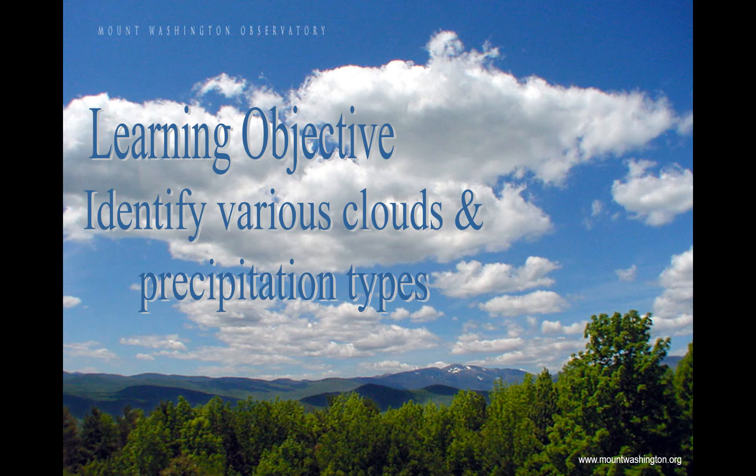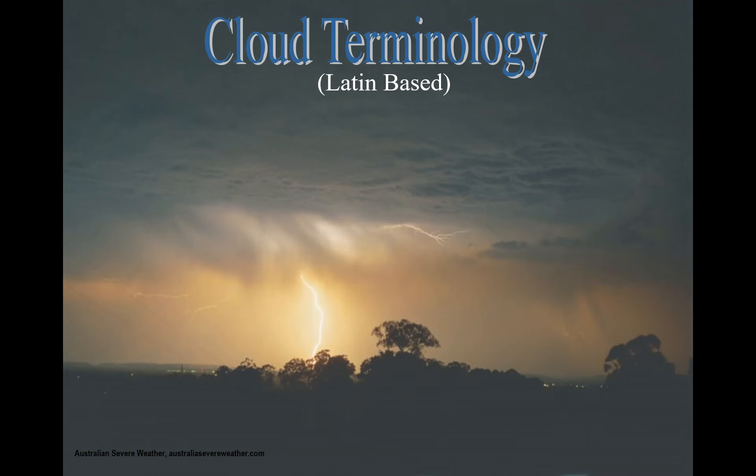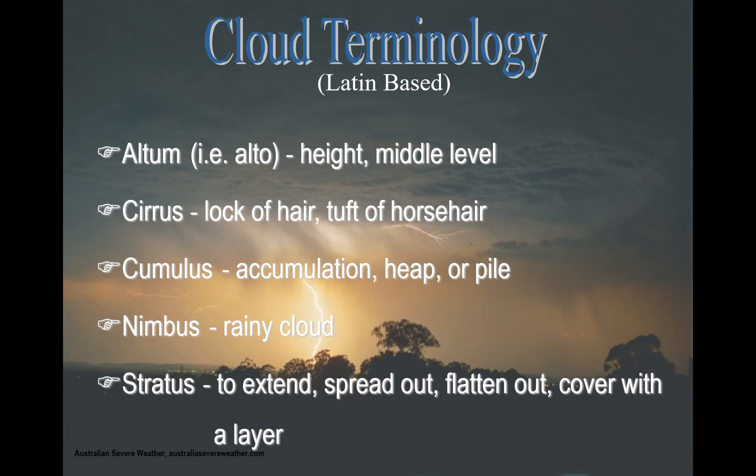Today's learning objective is to identify various clouds and precipitation types. We won't quite get to precipitation types just yet, but it's definitely coming in future videos. First, let's look at cloud terminology — everything is Latin-based. 'Alto' generally indicates a cloud in the middle levels of the atmosphere. 'Cirrus' refers to a lock of hair or tuft of horse hair — those really wispy clouds. 'Cumulus' represents an accumulation, a heap or pile. 'Nimbus' refers to a rainy cloud. And 'stratus' means to extend, spread out, flatten out, or cover with a layer — think layer-like clouds.